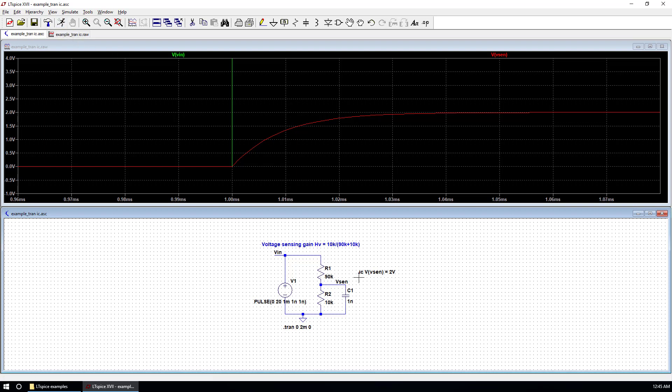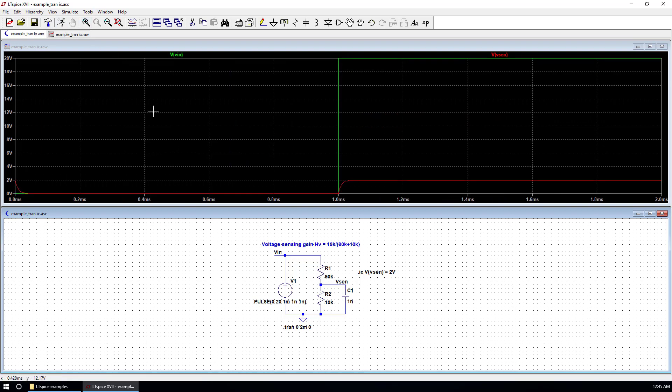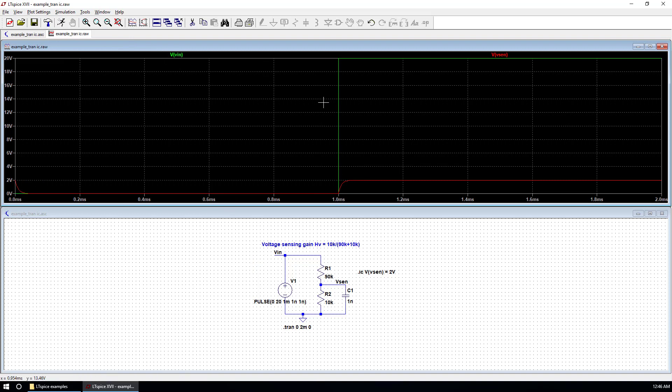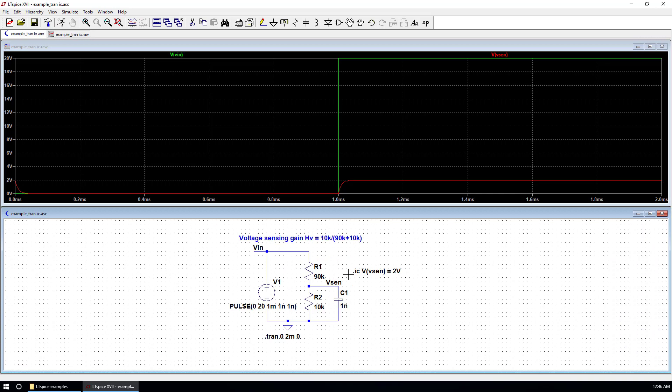Now we can run the simulation again. Remember, this initial condition at this V sense is 2 volts at the beginning when the time equals to 0. Now we run the simulation. We can see at the first time equals 0, we have voltage 2 volts at V sense. And it becomes discharged through these two resistors. It will charge up again by V in, which is a voltage step. So this lecture shows you how to add the initial condition into your circuit.